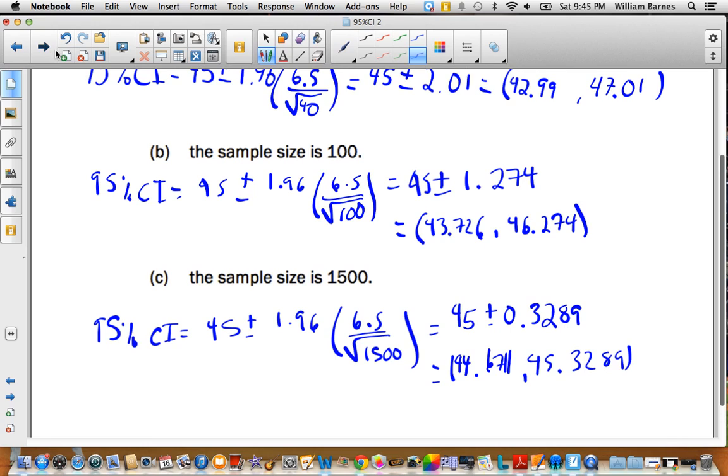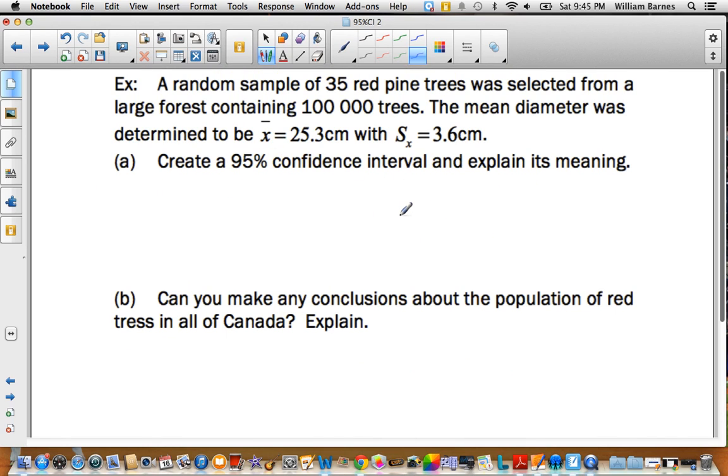Last example. A random sample of 35 red pine trees, not green pine trees, red pine trees, was selected from a large forest containing 100,000 trees. When you look at 100,000 tree forest and you select 35, that's a really small sample size. The mean diameter of the tree, so we're talking about the size of the trunk basically, was 25.3 centimeters. That doesn't seem that big, actually. With a standard deviation of 3.6. Let's calculate the 95% confidence interval.